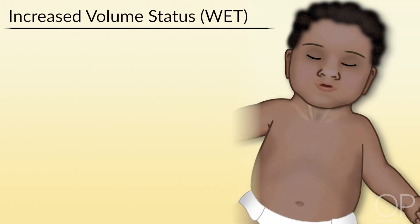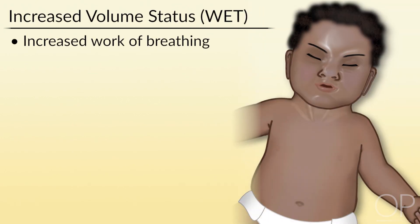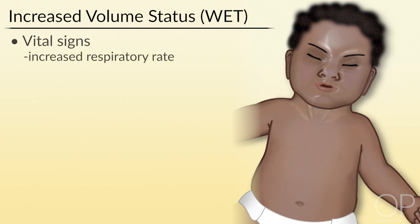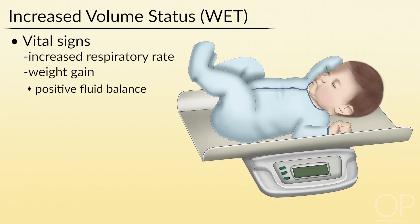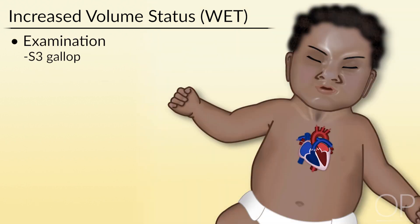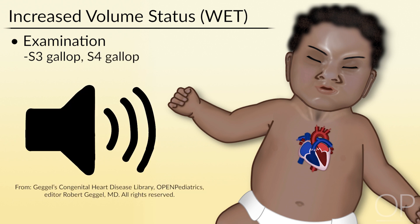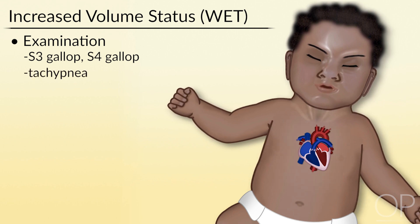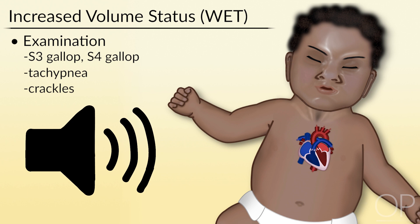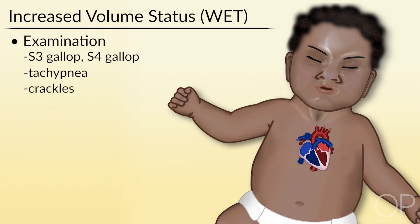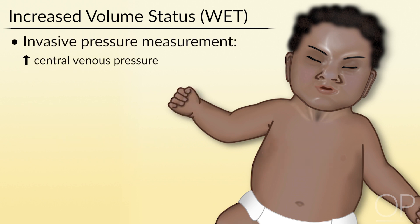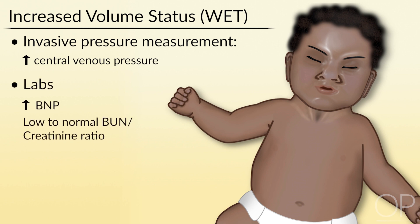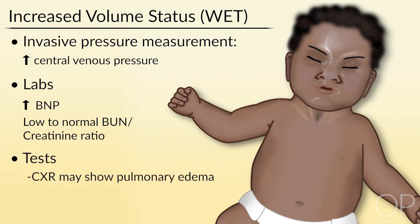In patients with volume overload, they will present with symptoms of increased work of breathing and respiratory distress. Review of vital signs may show increased respiratory rate, weight gain, and a positive fluid balance. Exam may show an S3 gallop, tachypnea, crackles, hepatomegaly, peripheral edema, or jugular venous distension. Labs may show an increased central venous pressure, elevated BNP, and a low or normal BUN-to-creatinine ratio. A chest x-ray may demonstrate pulmonary edema.